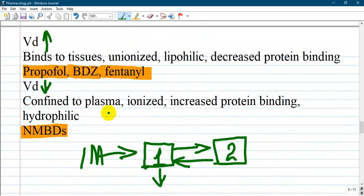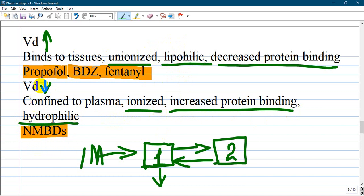Volume of distribution - which factors increase and which decrease? Unionized form, lipophilic, and decreasing protein binding increase volume of distribution. They allow drugs to pass into the second compartment. Drugs with decreased volume of distribution are ionized with increased protein binding and hydrophilic. Examples with high volume of distribution include propofol, benzodiazepines, and fentanyl. With decreased volume of distribution, neuromuscular blocking agents.